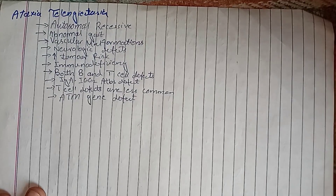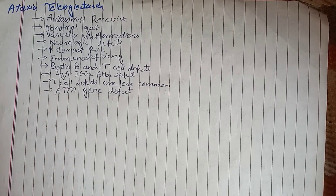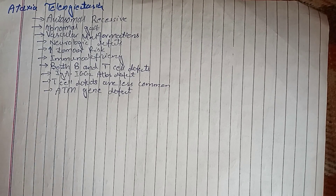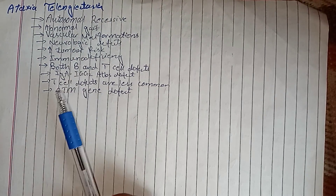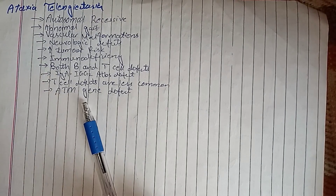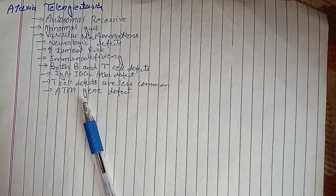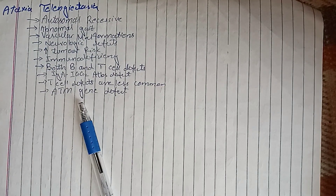Ataxia Telangiectasia is an autosomal recessive disease characterized by abnormal gait, vascular malformations, neurological defects, increased tumor risk, and immunodeficiency. Both B and T responses can be abnormal, but it principally affects IgA and IgG2 immunoglobulins; T cell deficiency is less common. The responsible gene is ATM, which normally detects cells with damaged DNA and leads to their apoptosis. When this gene is defective, there is no apoptosis, leading to developmental abnormalities and compromised immune response.